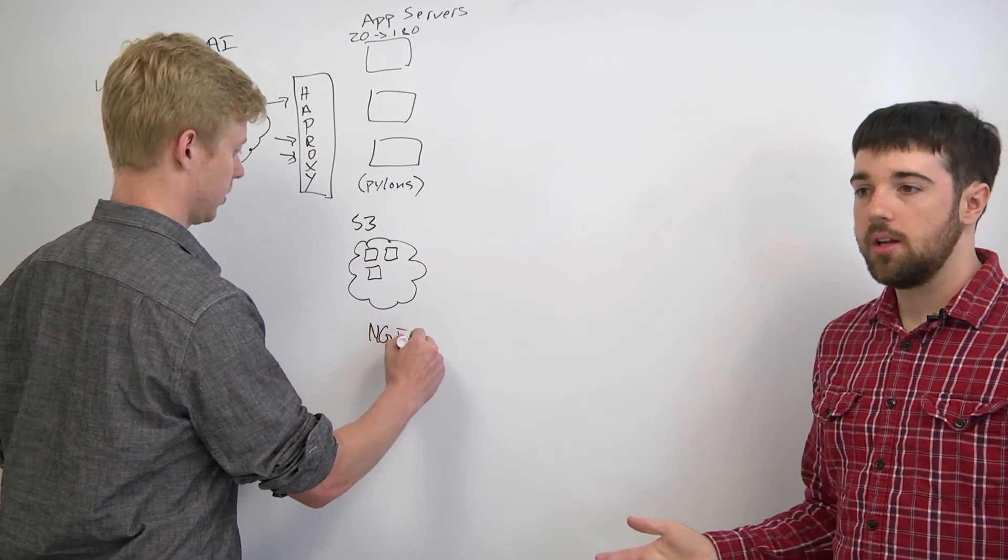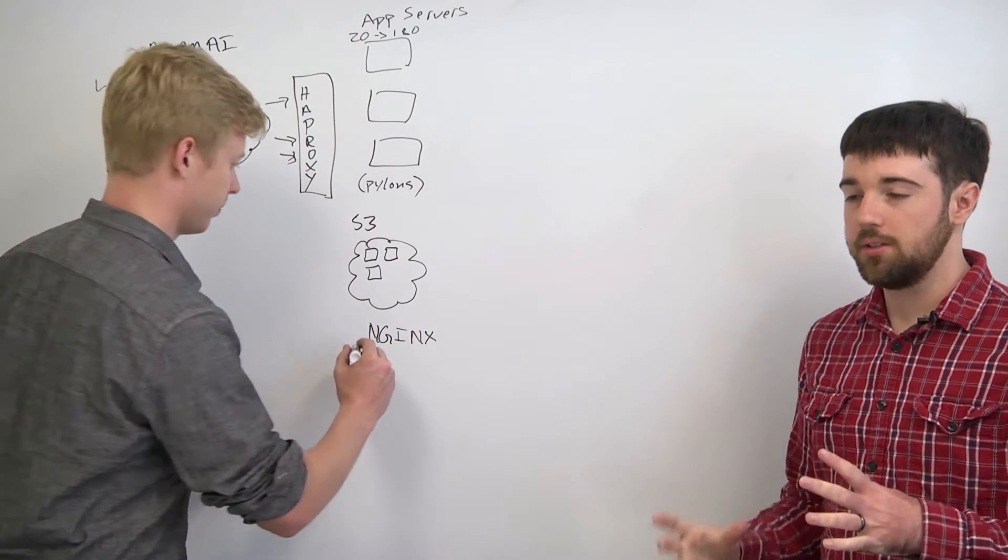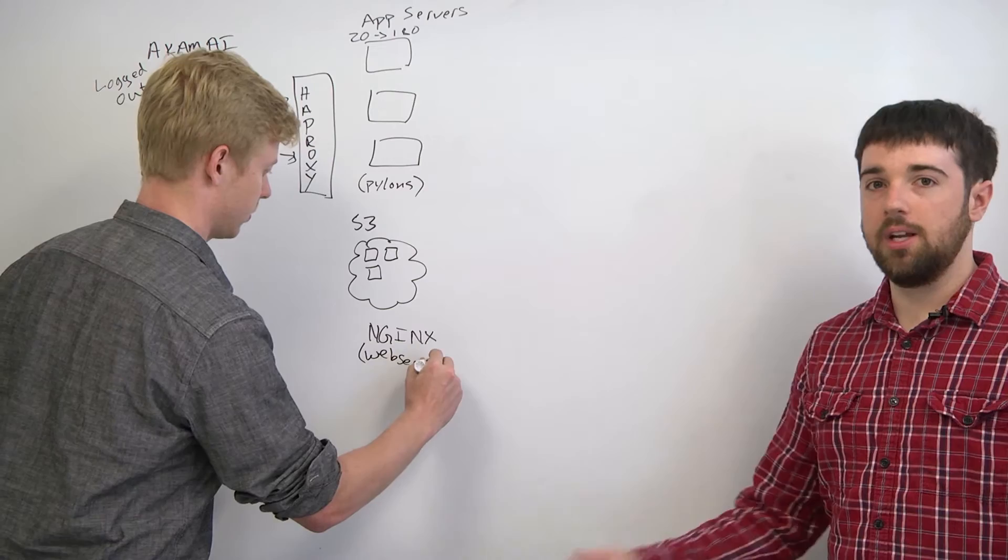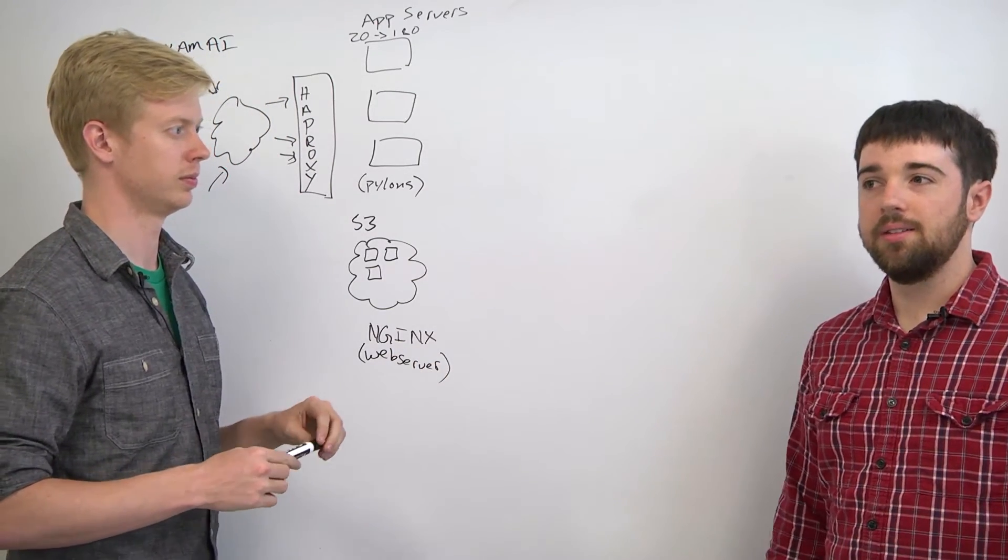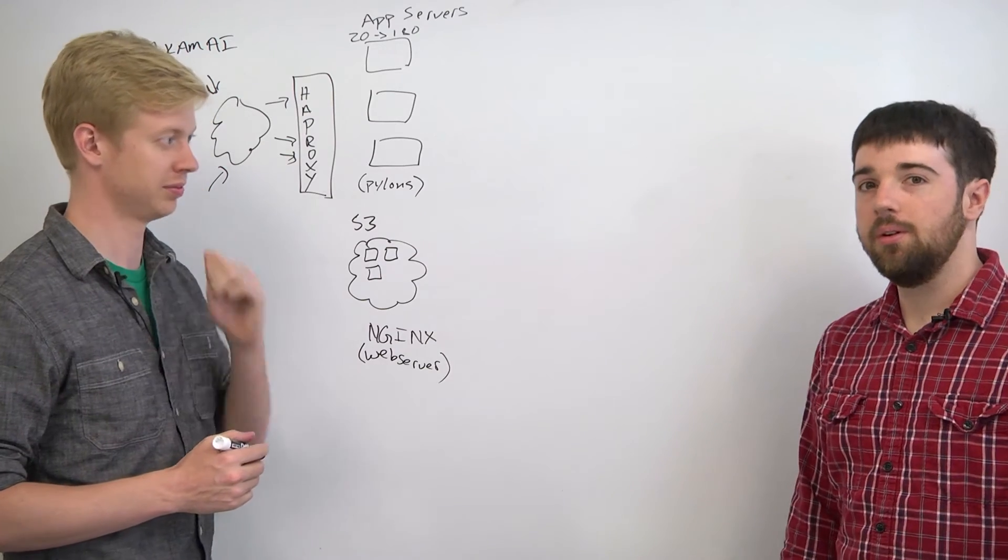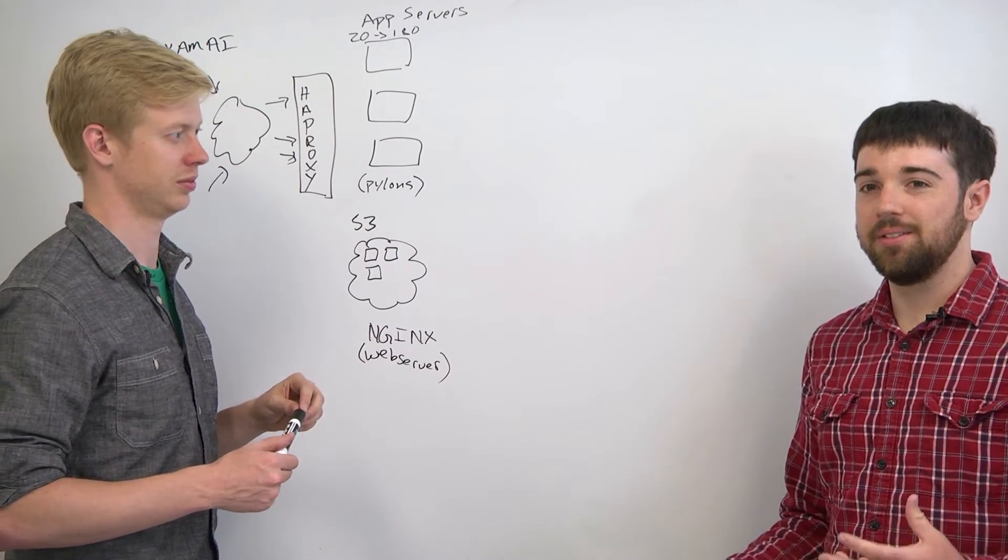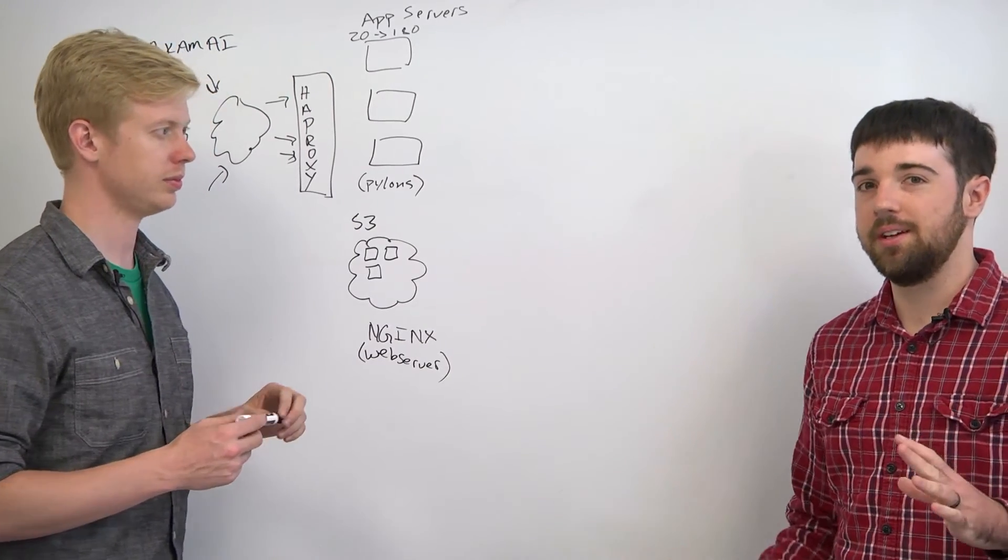So we were using Nginx and it got to the point where the one Nginx server doing all of the static content couldn't handle it anymore when we changed the content and everybody's caches were invalidated. And so we would do a deploy of new code and there would be this static content change and all of a sudden that Nginx would get overloaded and everybody would be getting completely unstyled Reddit.